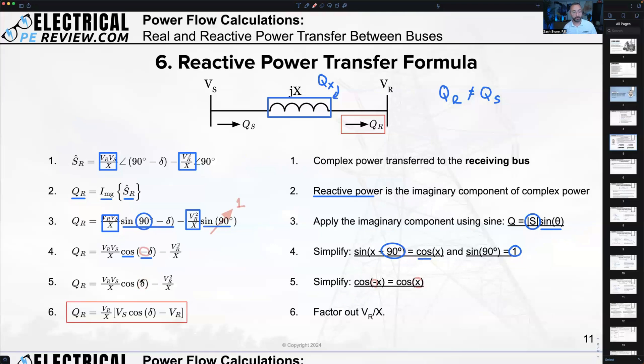Last step and we're done with all these formulas. All we're going to do is pull out and factor out the receiving voltage magnitude on both sides. I got Vr here and I'm going to replace this square with another Vr. So we're going to pull out a Vr on each side. Vr over X times parentheses. I still have Vs cosine delta, no change to the minus sign, and I still have this Vr here. We're done. The hard part is over. That's it for part two.